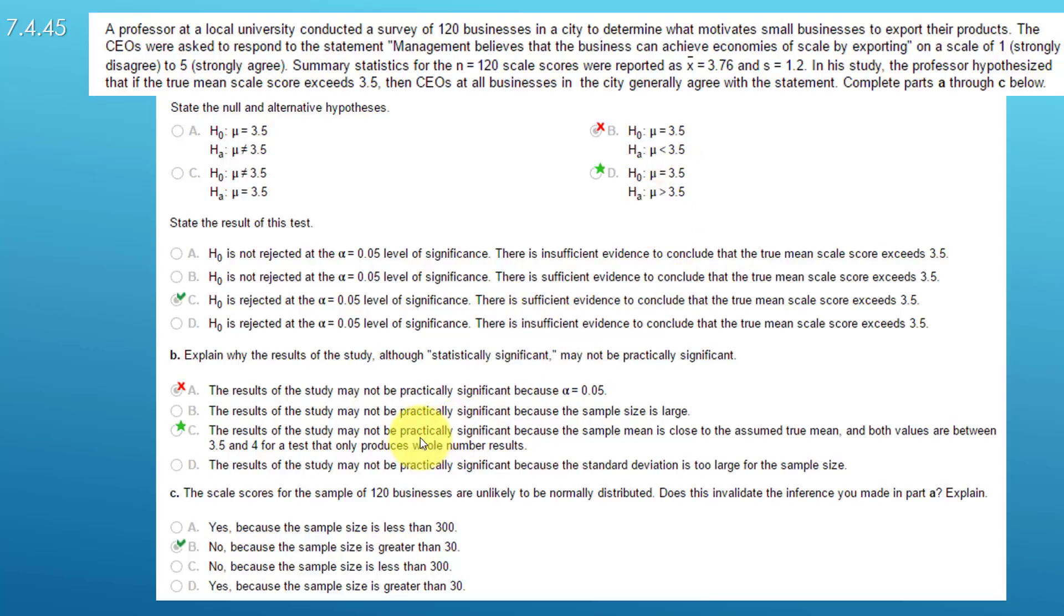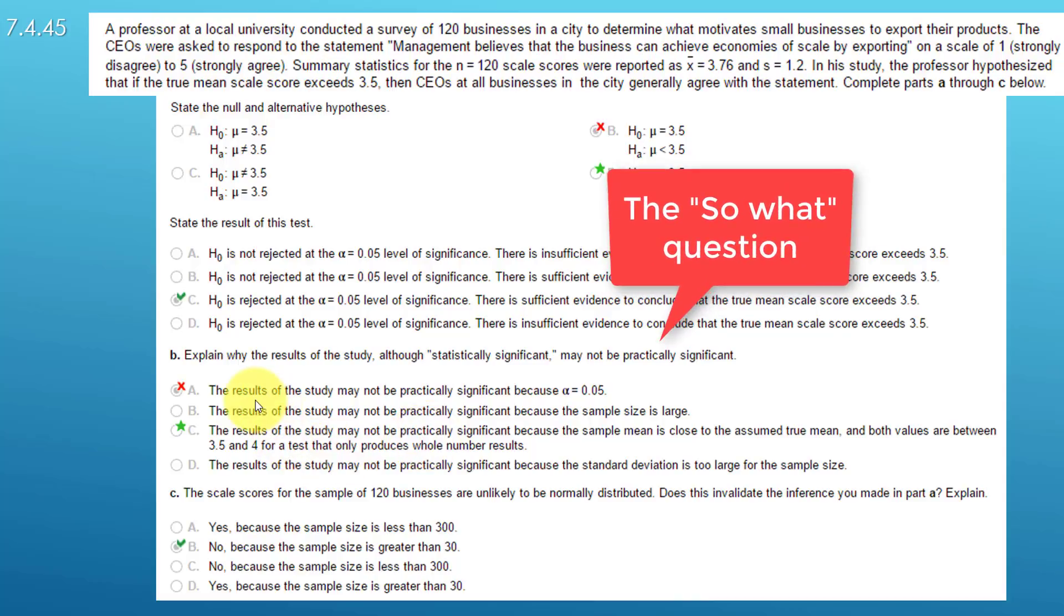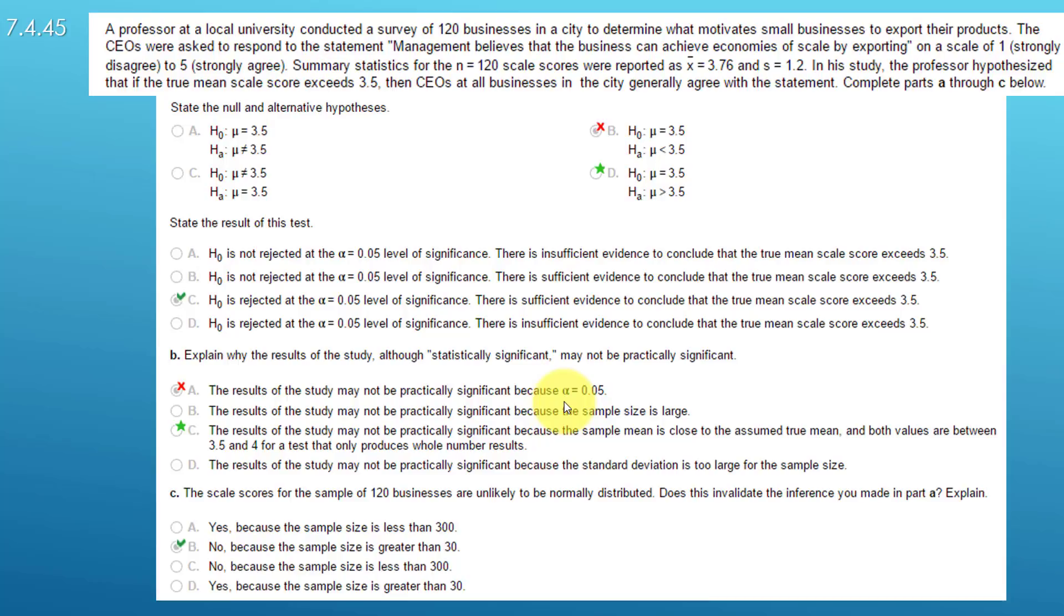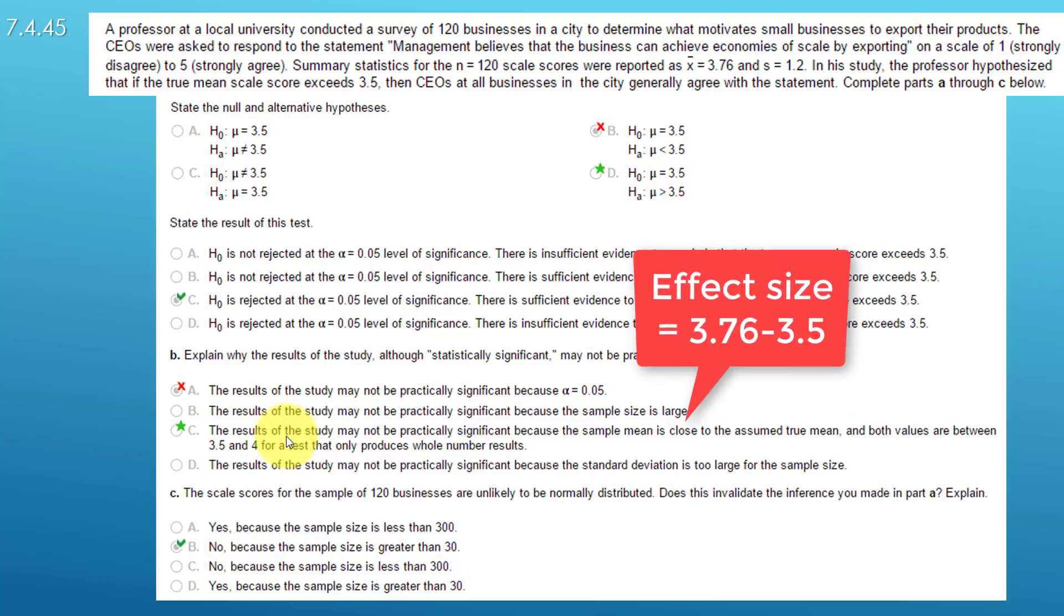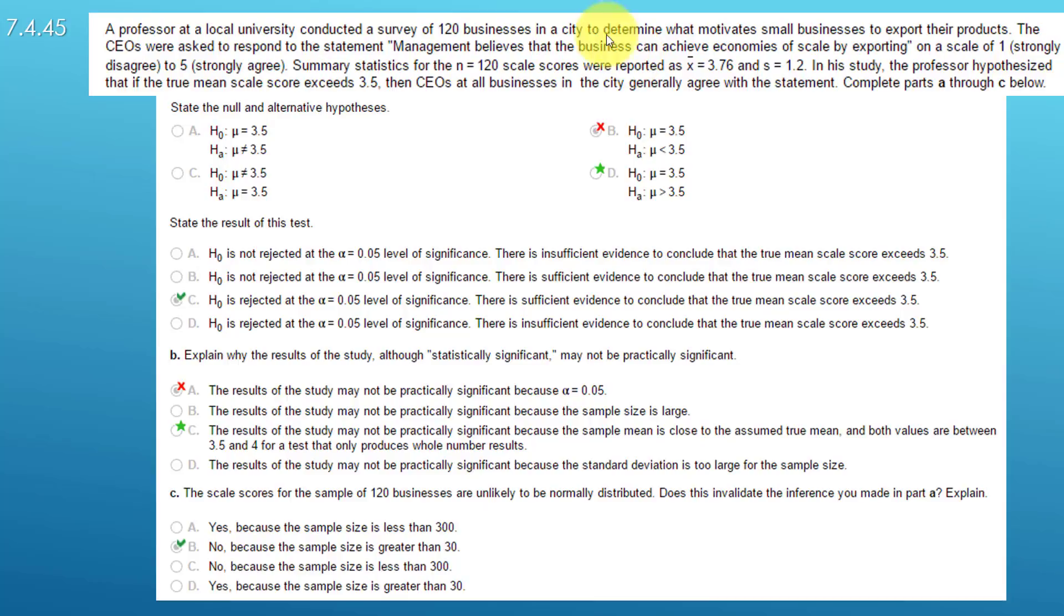Part B: Explain why the results of the study, although statistically significant, may not be practically significant. This student selected that the results may not be practically significant because alpha is 0.05. Well, yes and no. Obviously, if you had an alpha of 0.01 or 0.001, which many researchers do today, you might feel more confident about whether you really have a real difference. Remember, there's some probability that we are rejecting unfairly the null. But in this case, the best answer is that the effect size is really not that big. Our mean is 3.76, and as it says here, remember, we've got a Likert-like scale, one to five.